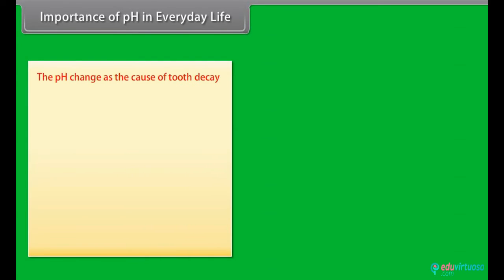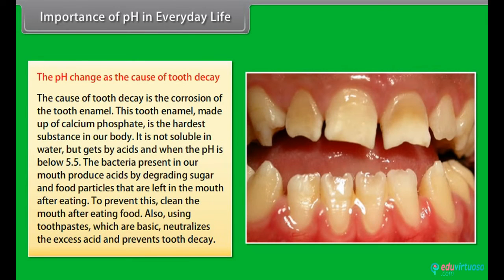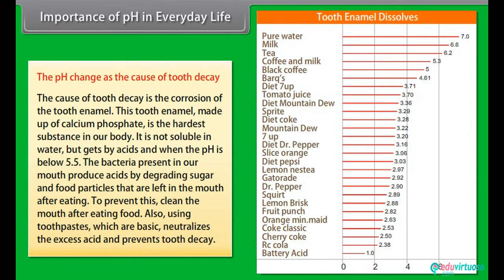The pH change as the cause of tooth decay. The cause of tooth decay is the corrosion of the tooth enamel. This tooth enamel, made up of calcium phosphate, is the hardest substance in our body. It is not soluble in water but gets corroded by acid when the pH is below 5.5. The bacteria present in our mouth produce acids by degrading sugar and food particles that are left in the mouth after eating.